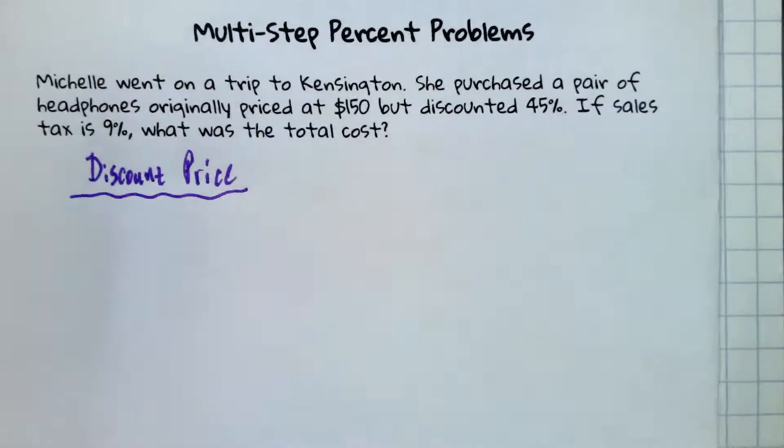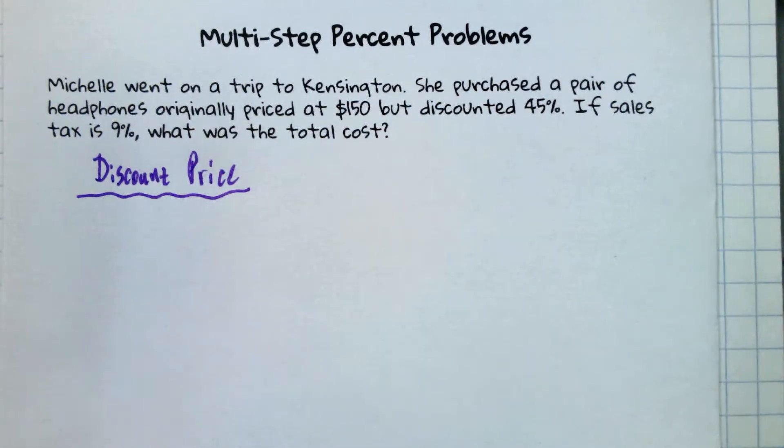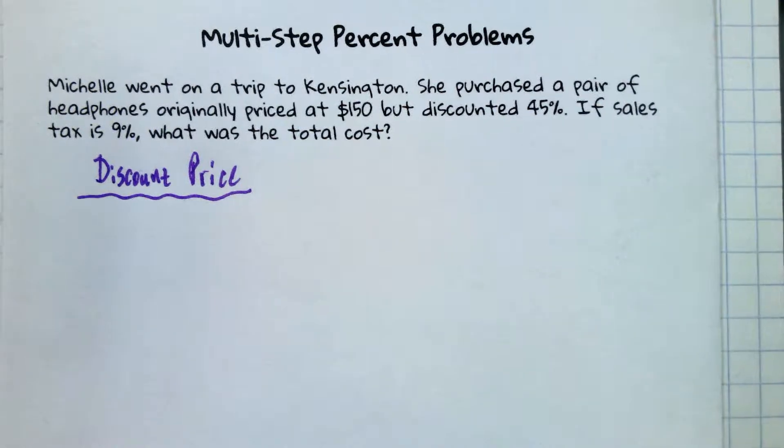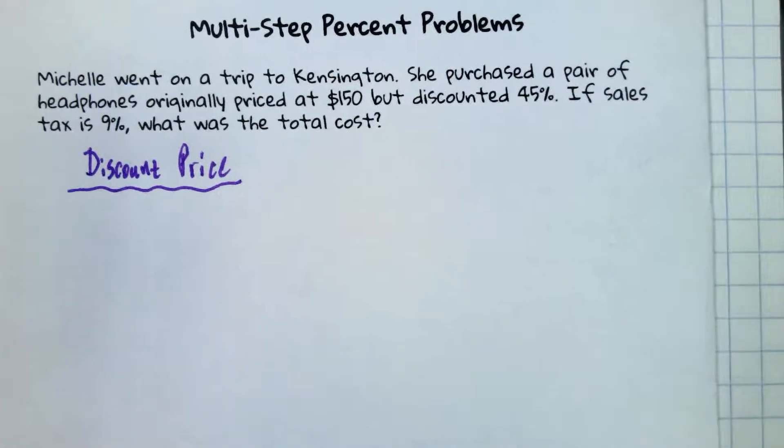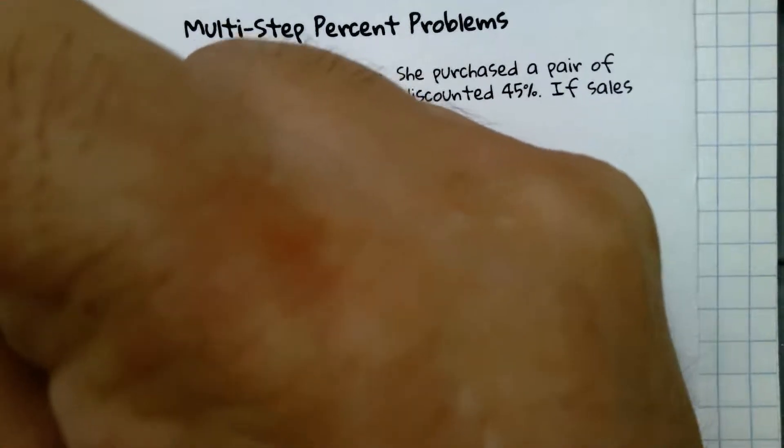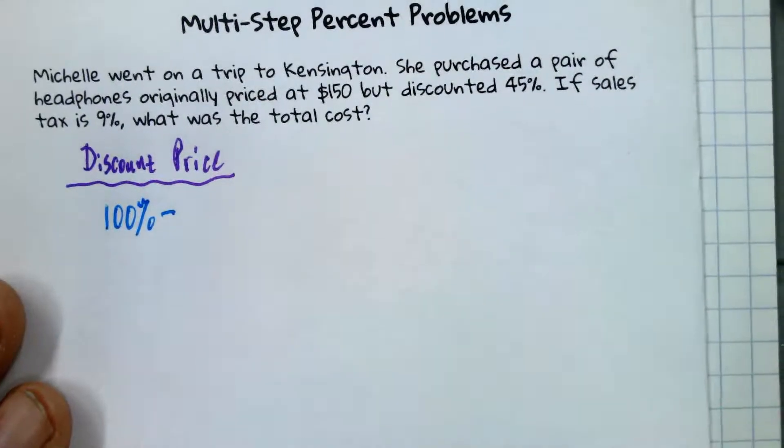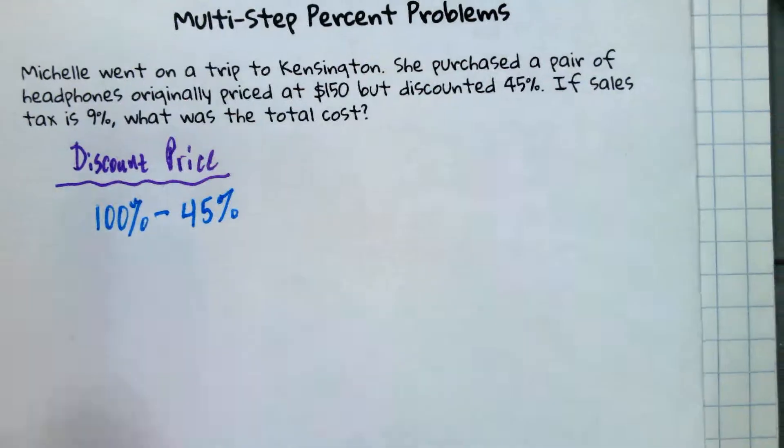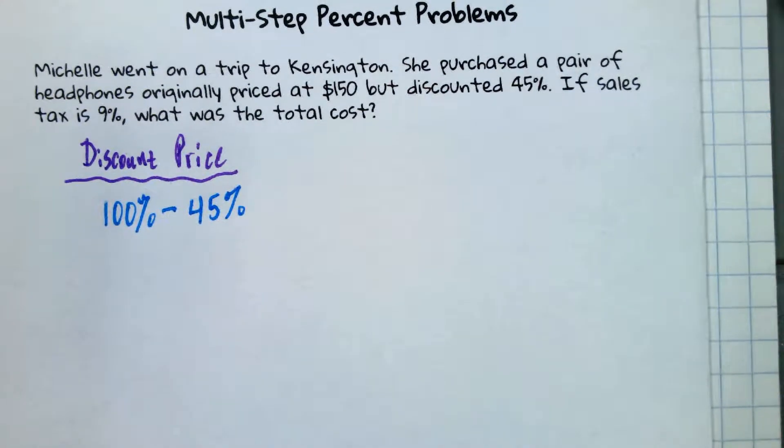Hold on for a second. Are they asking us to find out how much the discount is or the discounted price? The total with the discount, right? So there's a quick way to do that. It's related to what we did yesterday. We want the original price is 100%, but we're discounting or removing 45%. That would make it 55%.